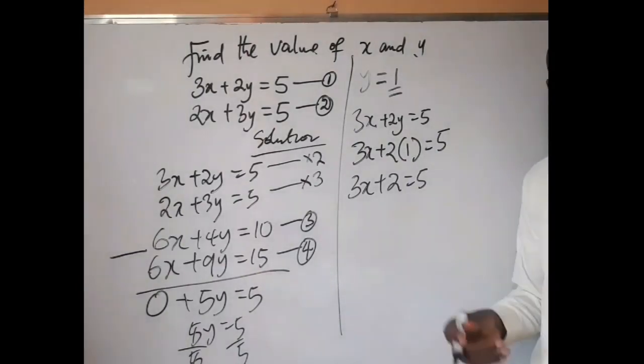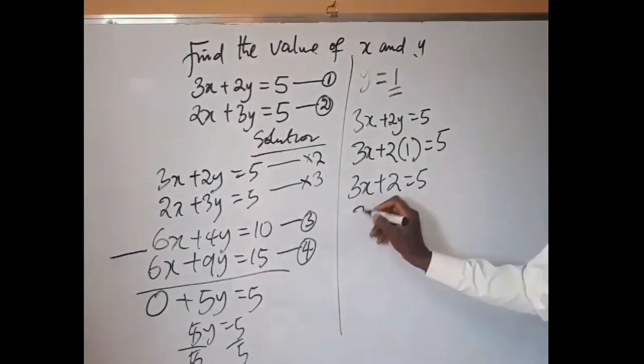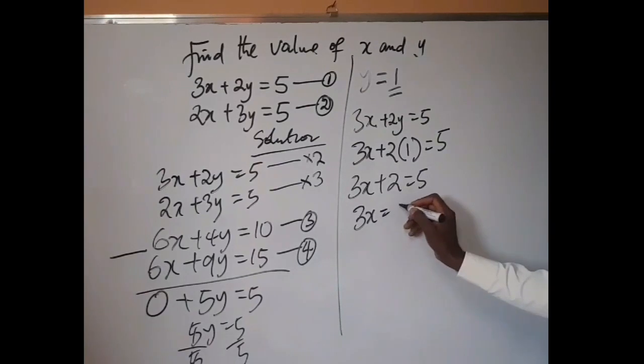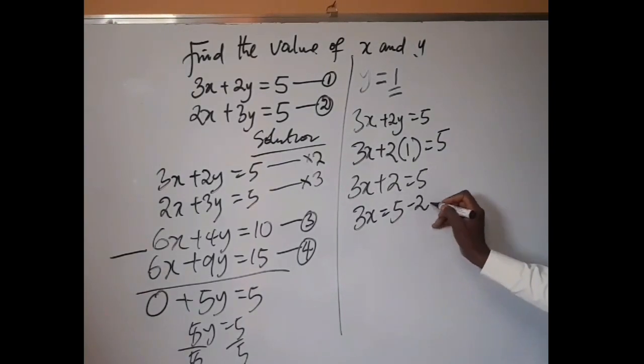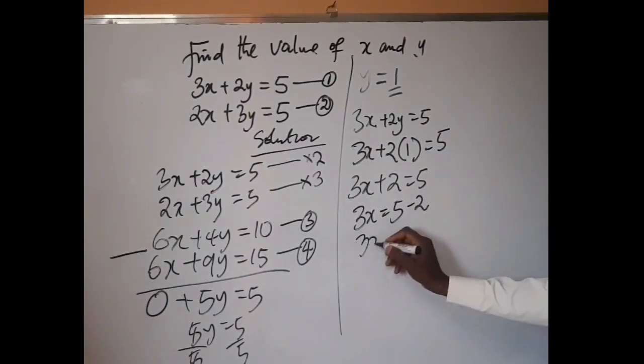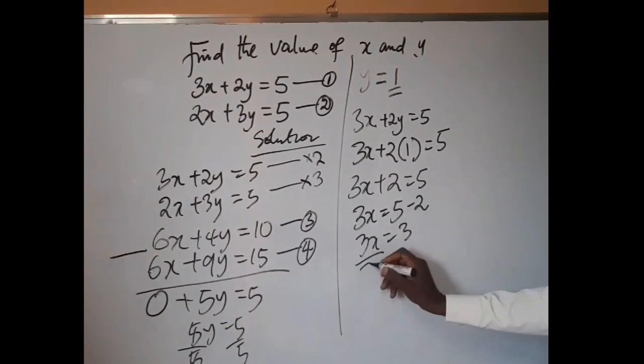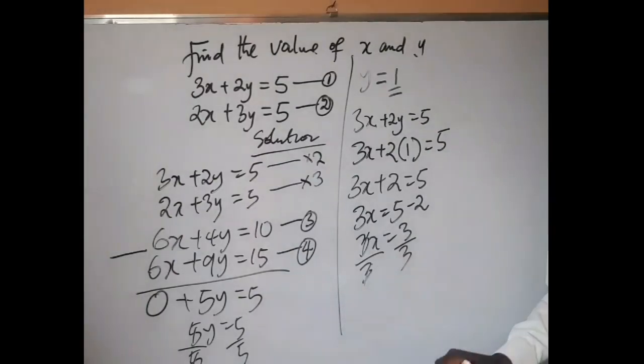Collection of like terms. So I will be having 3x equals 5 minus 2. So 3x is equal to 3. Dividing by 3, 3 will cancel 3.